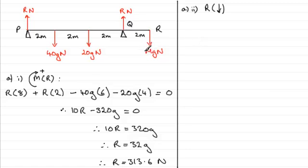Now if I resolve downwards then I've got MG acting downwards. And then I've also got plus 20G plus 40G acting downwards, a total of 60G Newtons. So that's plus 60G. And then I've got the two reactions acting upwards in the opposite sense to this. So that's going to be minus 2R.